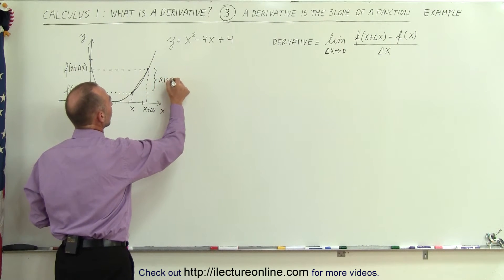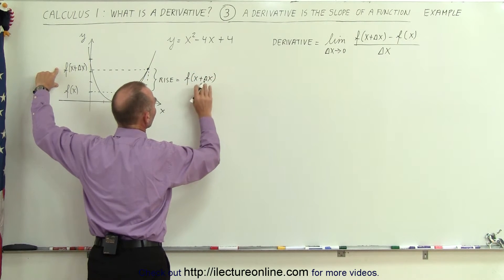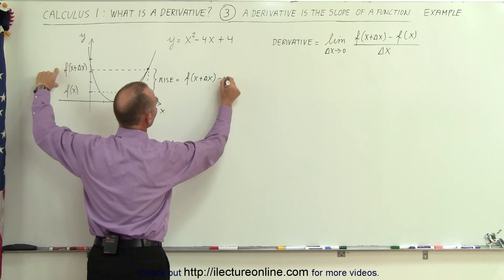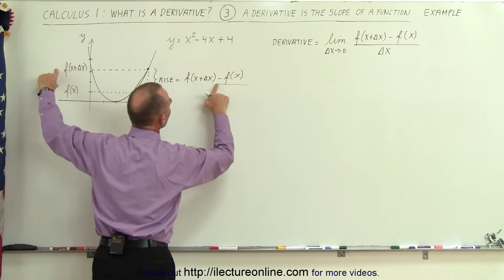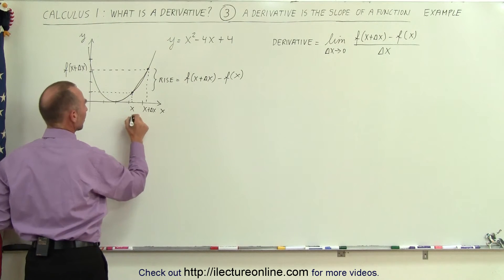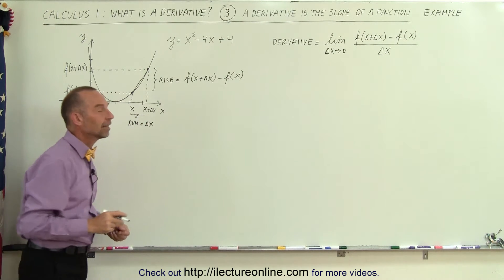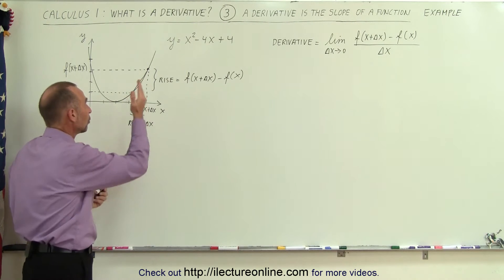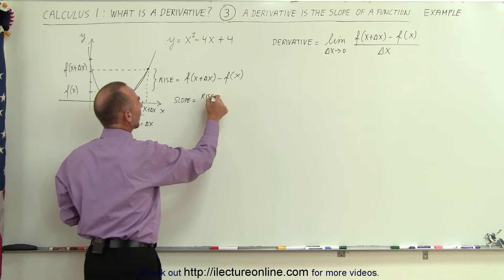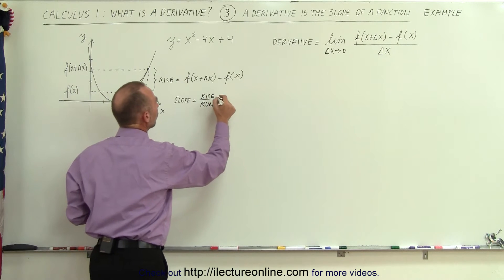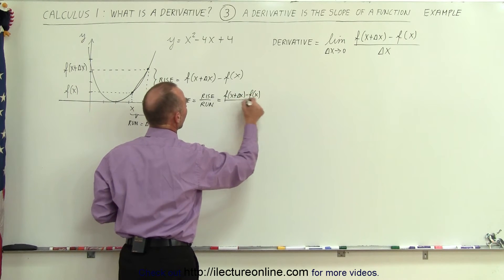The rise is going to be equal to the difference of these two: f of x plus delta x — the function evaluated at this value for x — minus the function evaluated at this value for x. Divide that by the run, which is equal to simply the change in x. By definition, the slope is the ratio of the rise over the run, which equals the function evaluated at x plus delta x minus the function evaluated at x, divided by delta x.